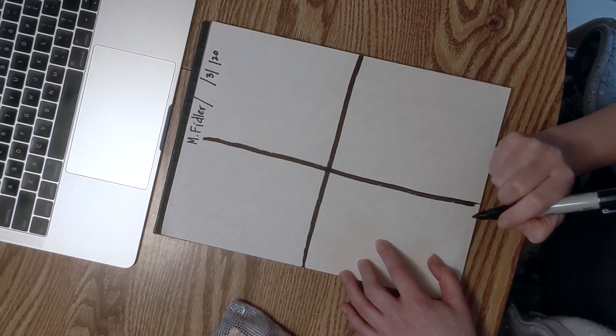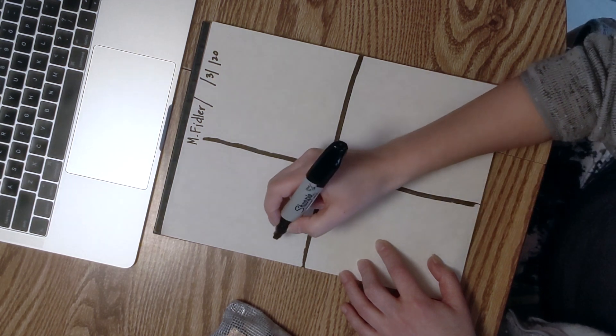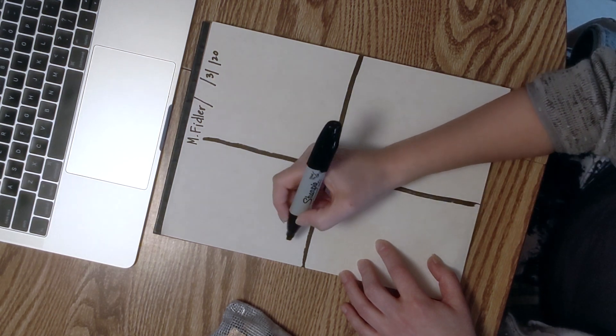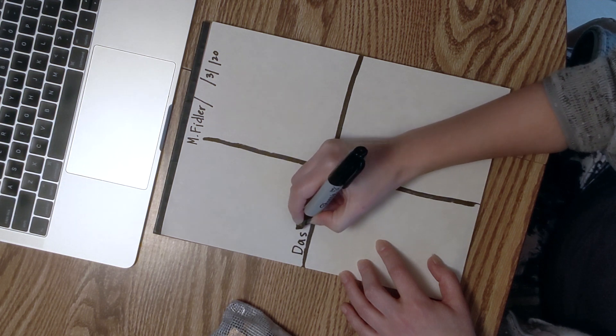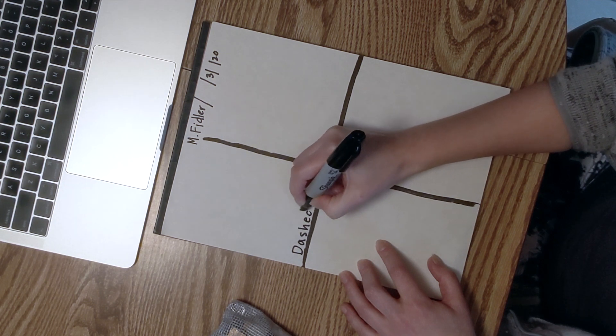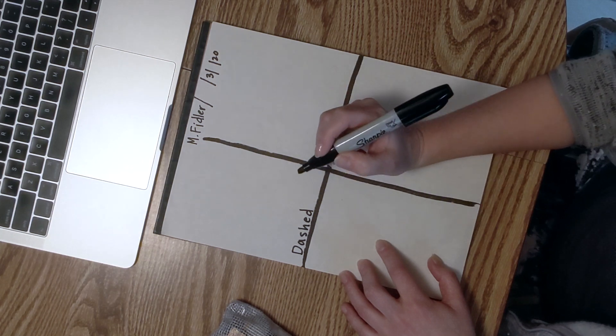Now let's label each box. In this first one, let's write dashed, dashed. D-A-S-H-E-D. For dashed lines we're going to be making.